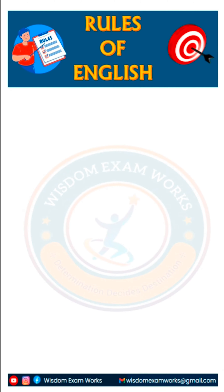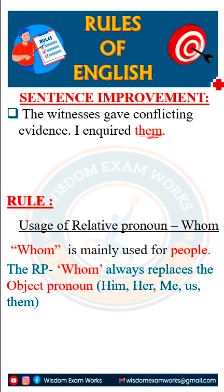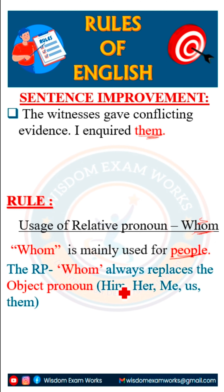In English, we can see a rule of English. The sentence is improved. The witness gave conflicting evidence. So, if you see the sentence is improved, how will it be? That is why 'who' is mainly used for people. 'Who' is mainly used for people — it could be used for people.